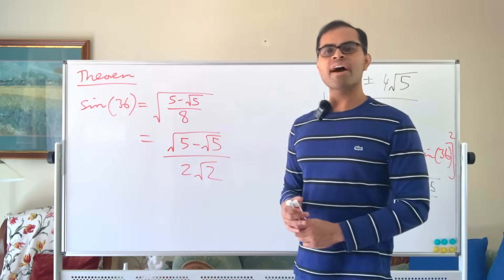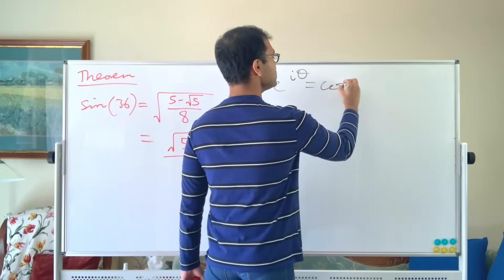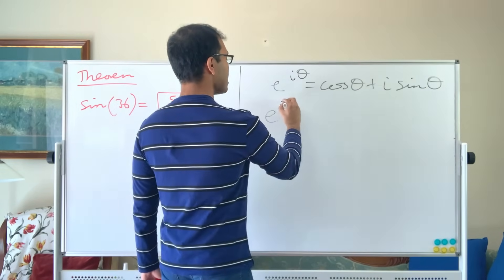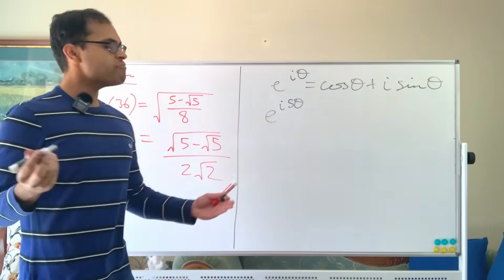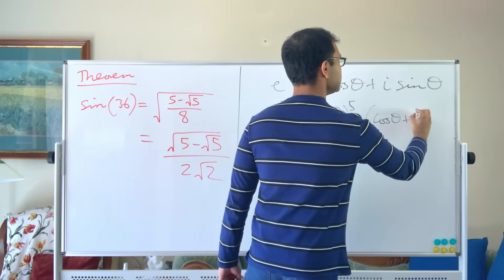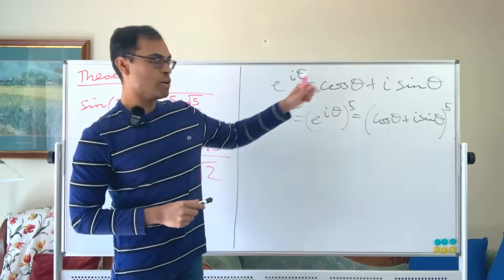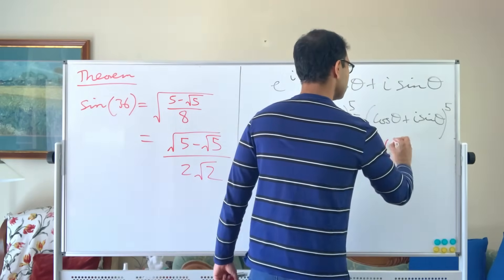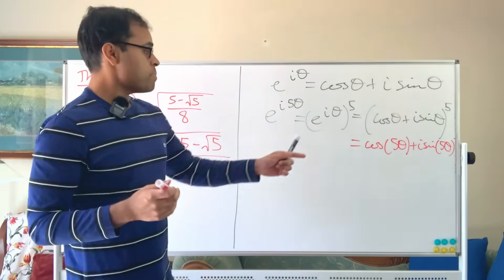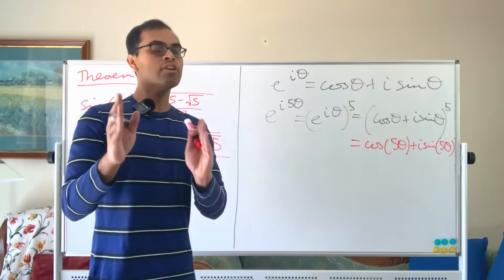Now, why is the sine power 5 formula true? We use Euler's formula: e^(iθ) = cosθ + i sinθ. So e^(i5θ) = (e^(iθ))⁵ = (cosθ + i sinθ)⁵. But also e^(i5θ) = cos(5θ) + i sin(5θ). Comparing imaginary parts using the binomial theorem gives us a formula for sin(5θ).